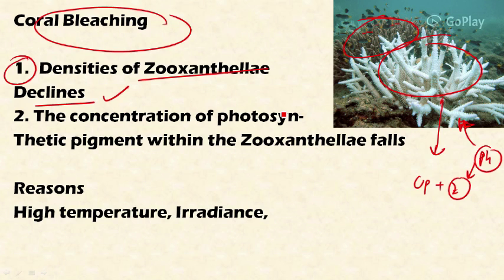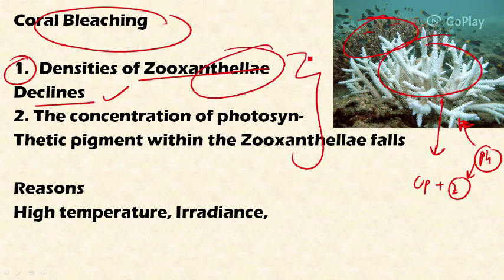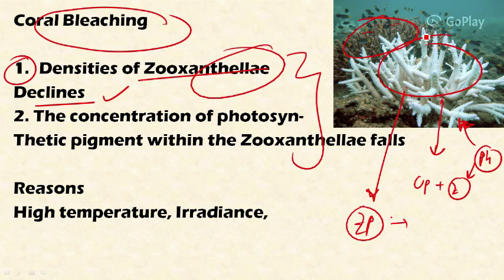Coral bleaching is caused by a decrease in the density of zooxanthellae, resulting in reduced pigmentation. Another reason may be a fall in the concentration of photosynthetic pigments within the zooxanthellae. If the concentration of zooxanthellae declines, the symbiotic association collapses because zooxanthellae produce carbohydrates as food for the coral reefs, and without them, the coral polyps are also destroyed.